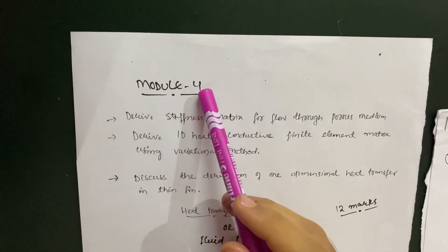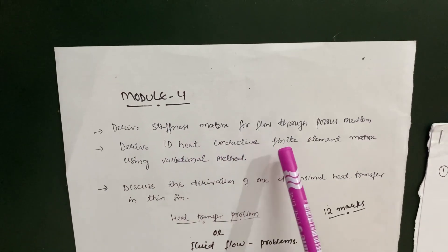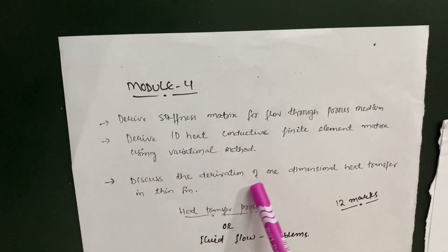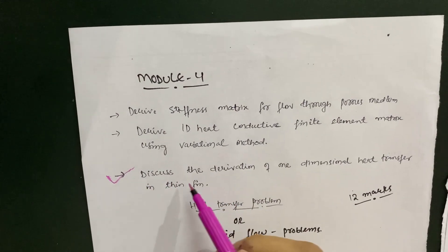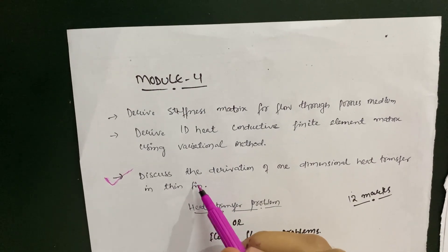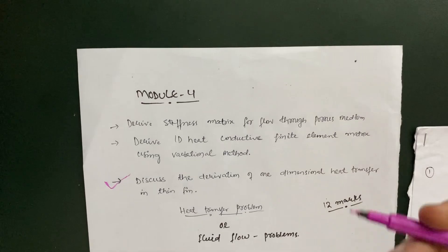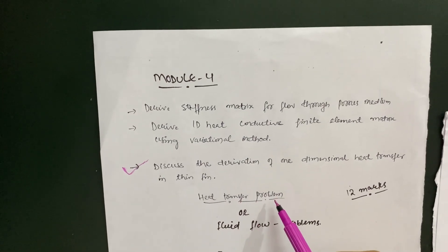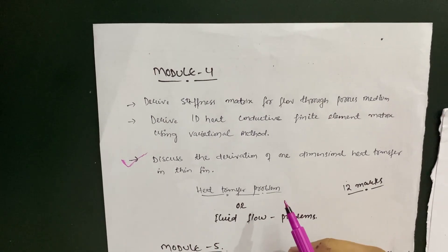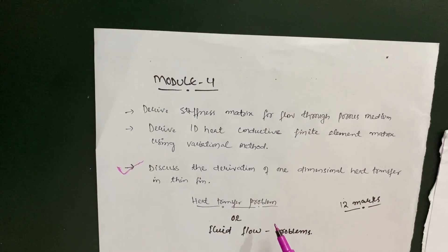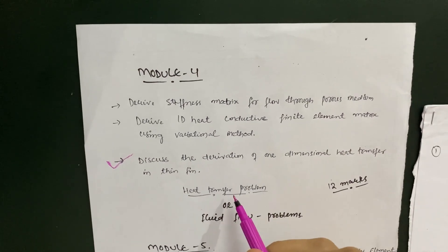In Module 4, go through three derivations: derive the stiffness matrix for flow through porous medium; derive the 1D heat conductive finite element matrix using the variational method; and discuss the derivation of one-dimensional heat transfer in a thin fin. That last one is particularly important — it has been asked in nearly every VTU examination. For passing, you can easily get 10 marks in this module. For scoring higher, go through the heat transfer problems, which are very simple but follow the same FEM procedure as truss and bar problems.